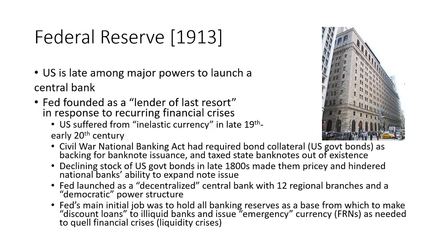The Fed's initial job was to hold all the banking reserves in the country, centralizing them as a base to make discount loans to banks suffering illiquidity — banks that needed cash or currency to give to their depositors, whether on a seasonal basis or in case of a major system-wide liquidity crisis. Federal Reserve notes were not the main source of currency at the time; the main sources would have been gold and silver certificates and national bank notes issued by those Civil War-era national banks. The Fed could step into the breach during emergencies and expand the currency supply with Federal Reserve notes, which would then be retired as demand subsided.